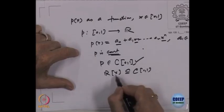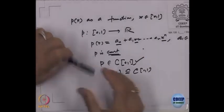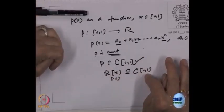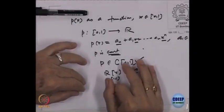C[0,1] is itself a vector space: given two functions on [0,1] taking real values, we can add them — f + g is defined by (f+g)(x) = f(x) + g(x), and scalar multiplication α·f is defined by (α·f)(x) = α·f(x). So C[0,1] becomes a vector space. R[x] sits inside C[0,1] as a subspace of infinite generation, so C[0,1] cannot be finitely generated either. That is another example.